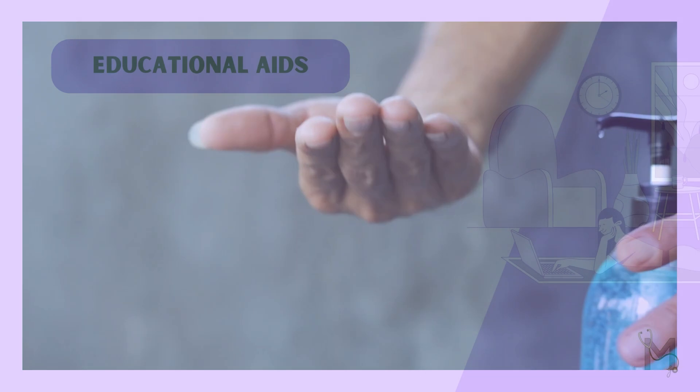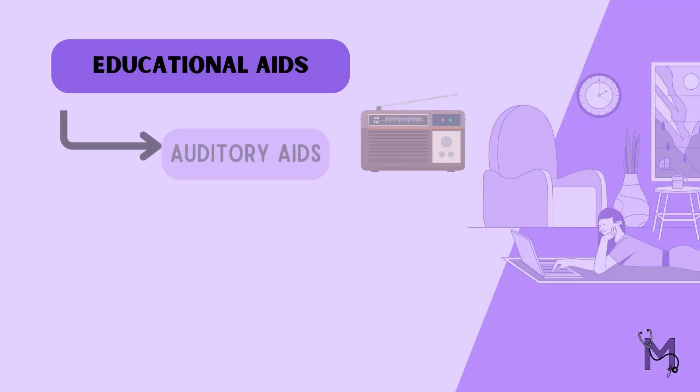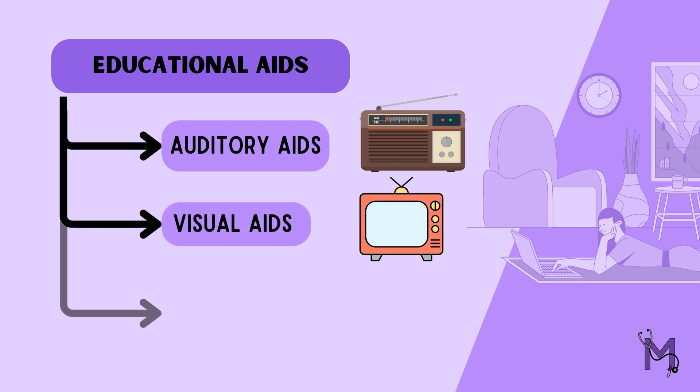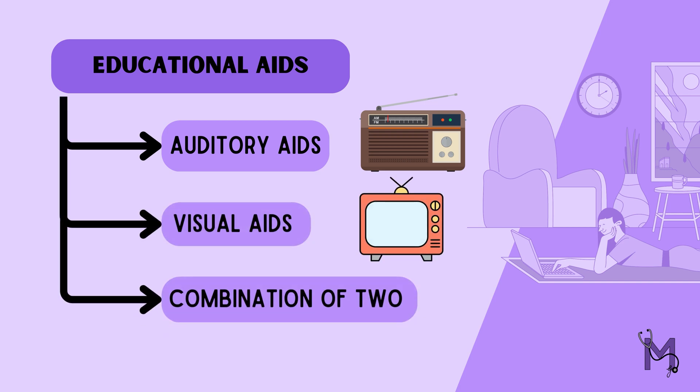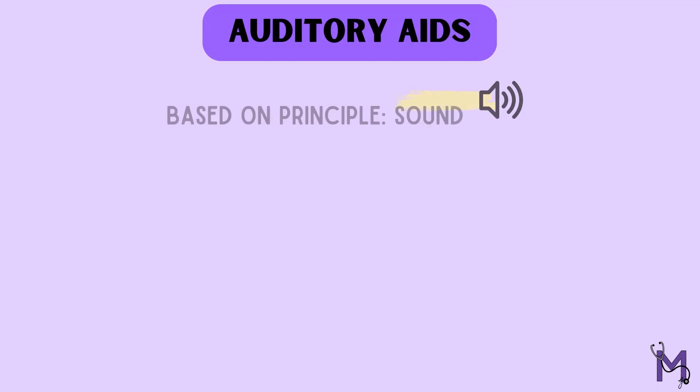A wide variety of media are used for this purpose, which can be classified into three main categories: auditory aids, visual aids, and a combination of the two. Let us understand each type in brief. First are the auditory aids, which as is evident are based on the principle of sound.